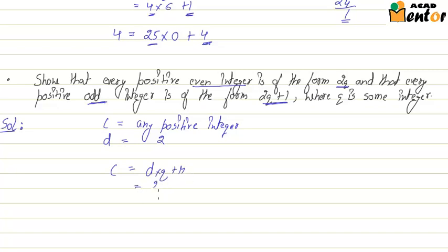And using the same Euclid's division lemma we can say that this R has to be greater than or equal to 0 but less than D which is 2 in this case.